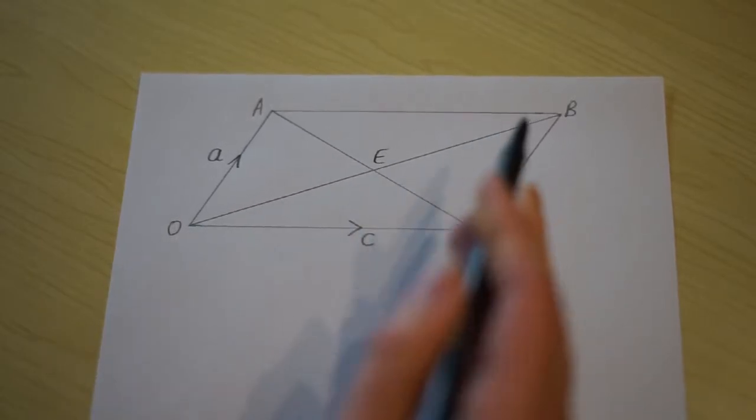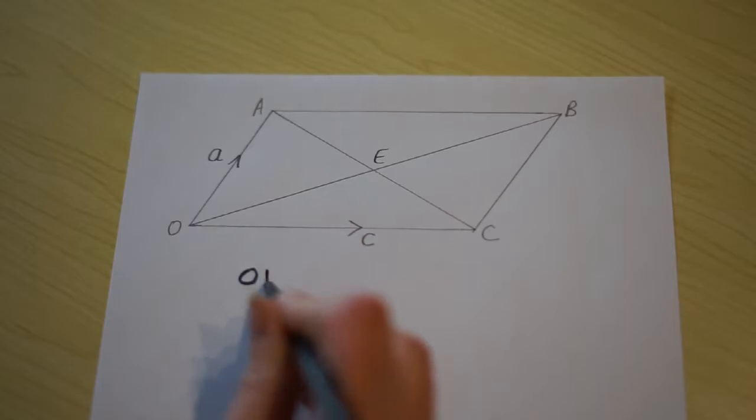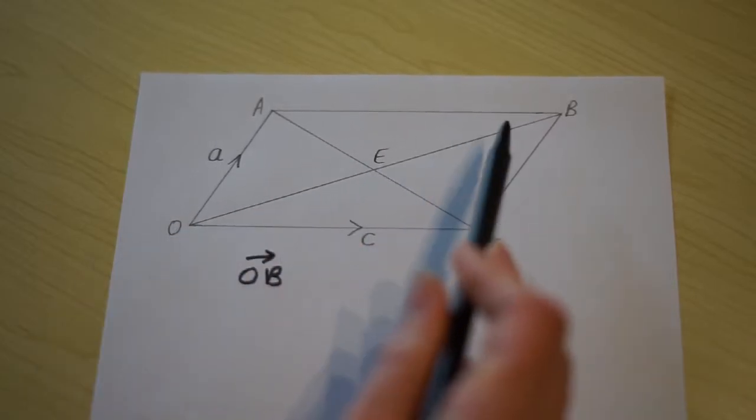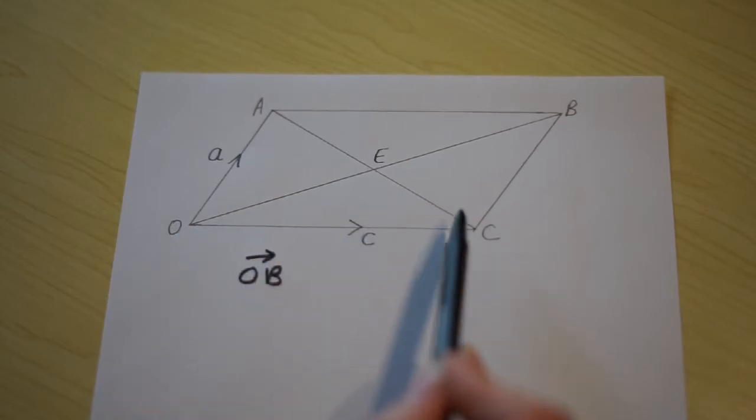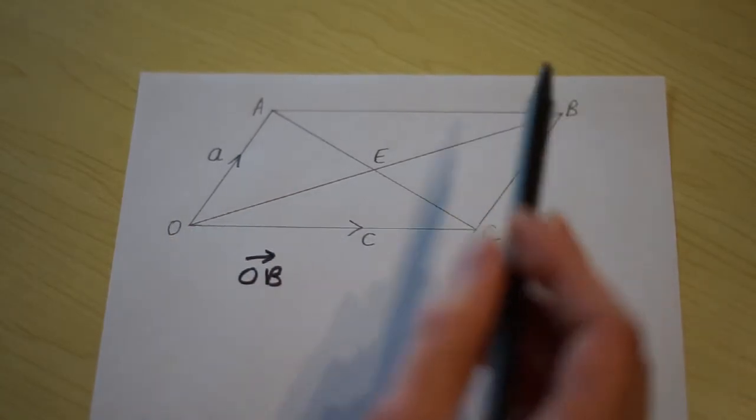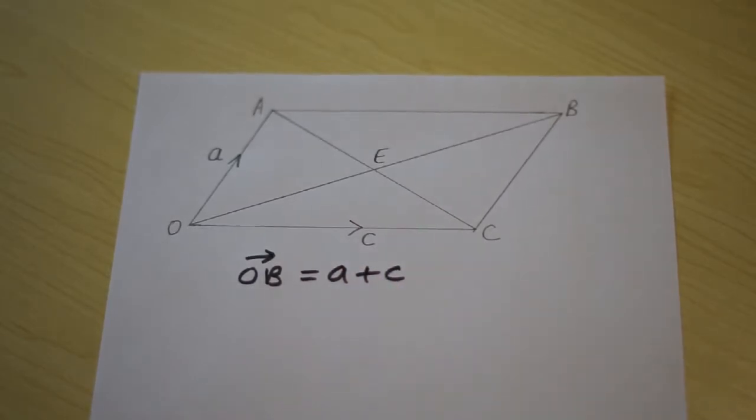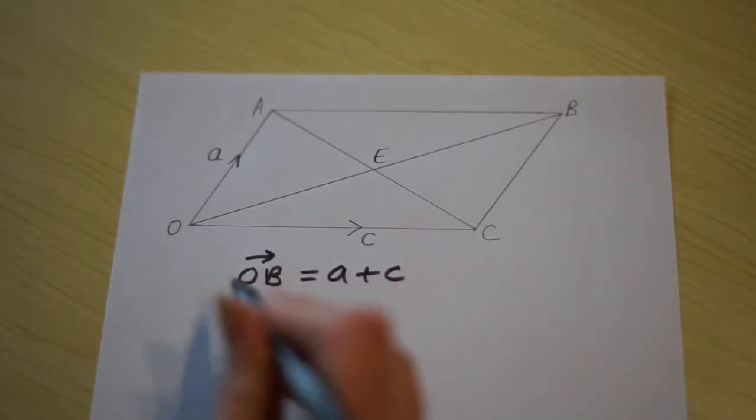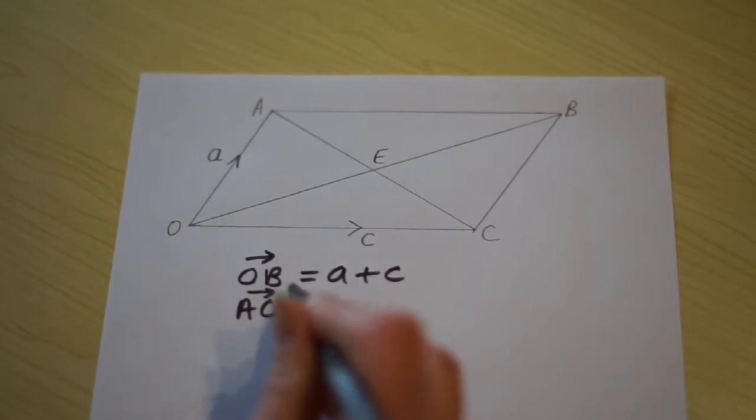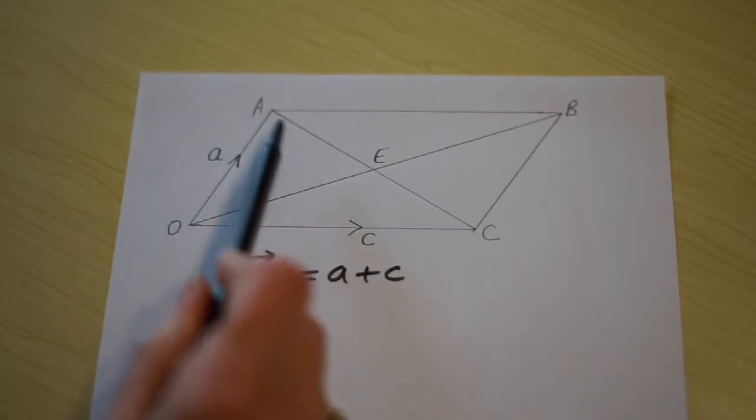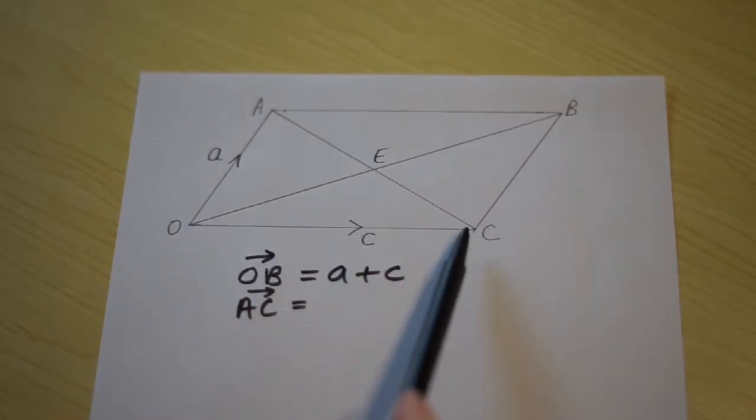Let's work out what OB is. Vector OB is c plus a. I took an alphabetical order. And AC, vector AC is negative a plus c.